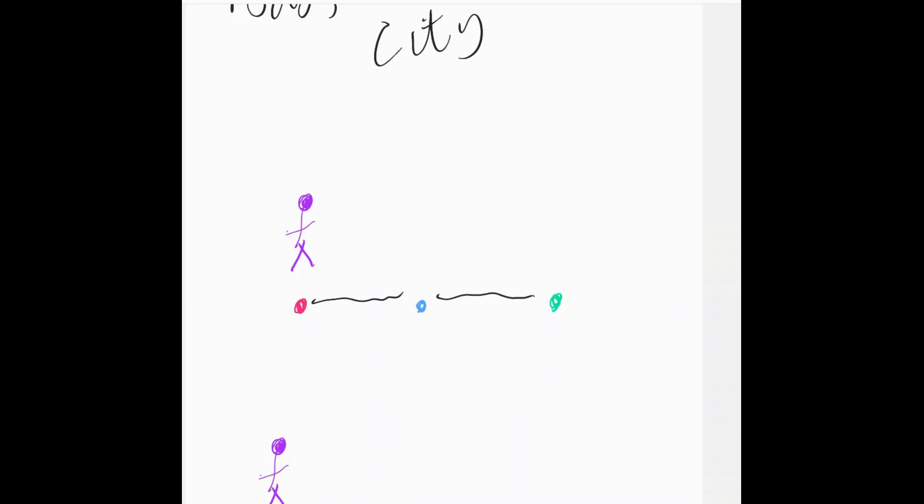And there's a certain dot product that we can define on this vector space of populations. And when we dot the unit vector associated with one city with itself, we get two. When we dot it with the unit vector of an adjacent city, we get minus one. And when we dot it with a unit vector of a city that's not connected to it, we get zero.